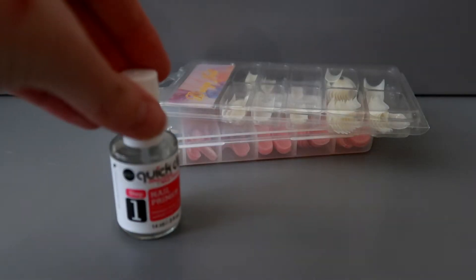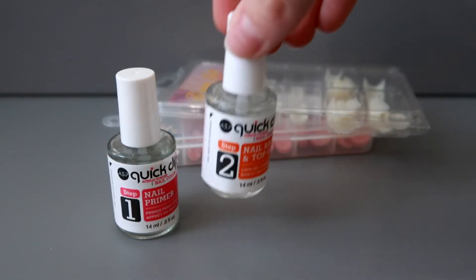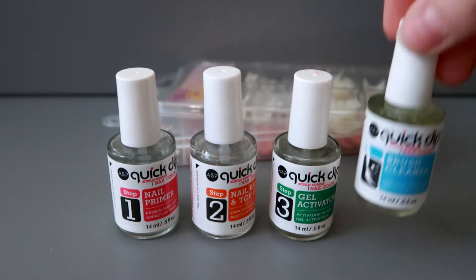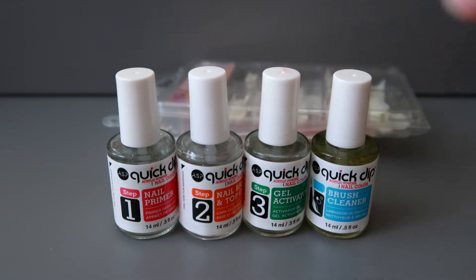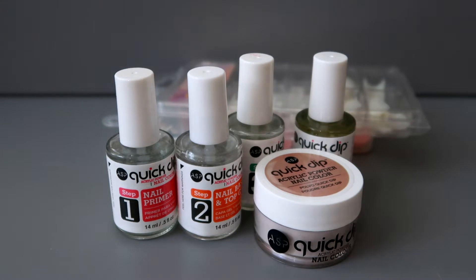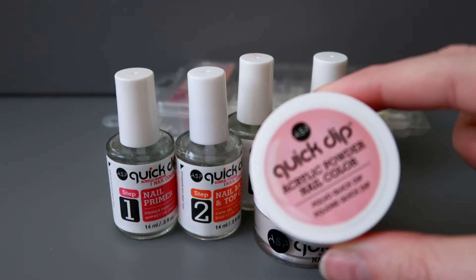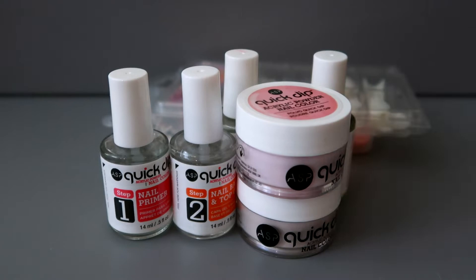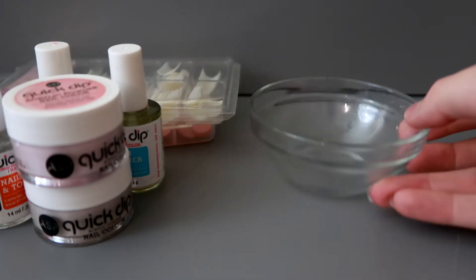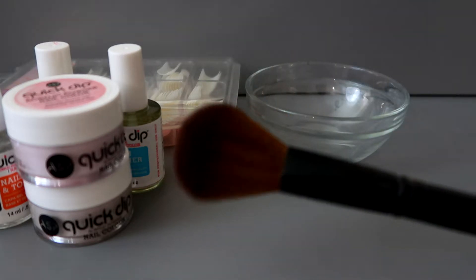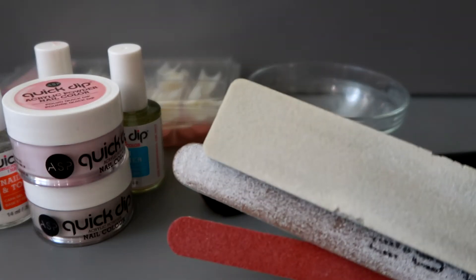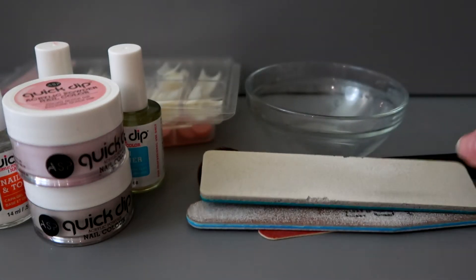Make sure in your kit you have your step one nail primer, step two nail base and top gel, step three the gel activator, the brush cleaner, whichever color powder you're going to use, and then extras on the side. I like to have a bowl to put the powder in because I am using nail tips. My nails are too long to dip directly into the powder container. I like to have a nice clean makeup brush. You need some nail files and buffers, nail clippers and cuticle pusher.